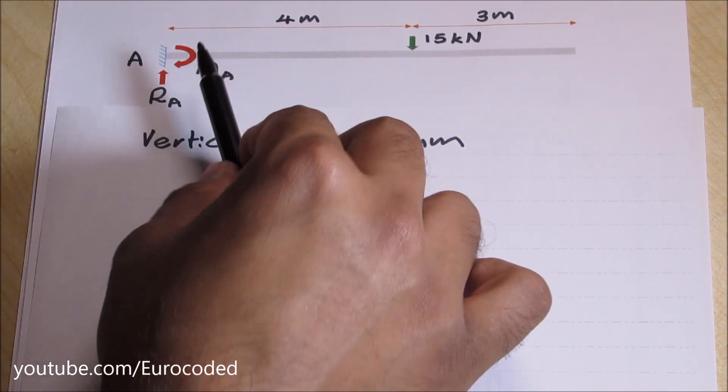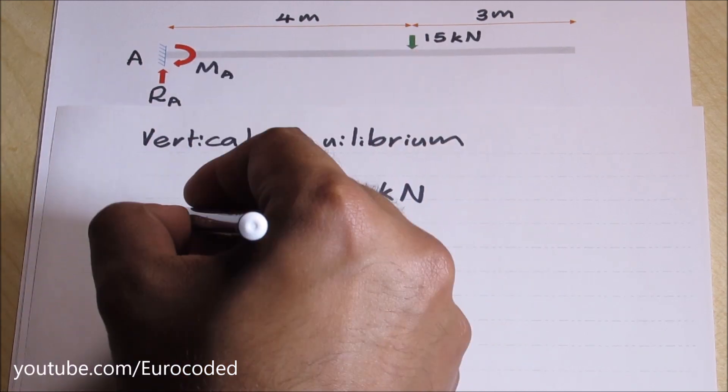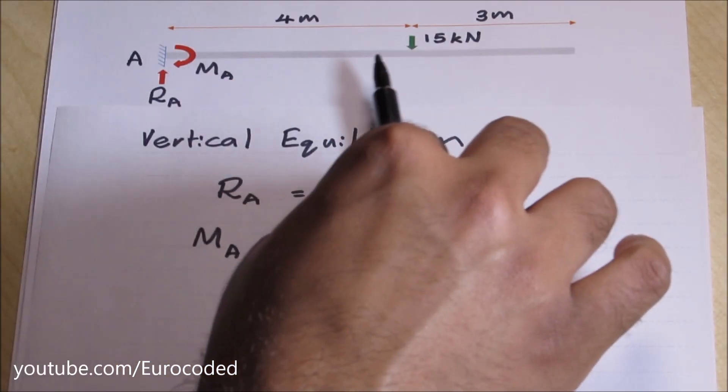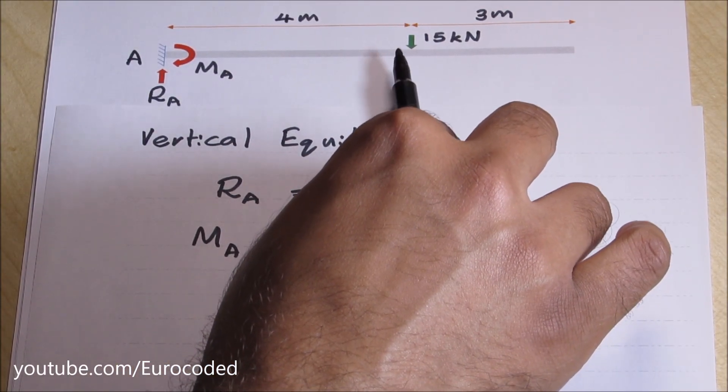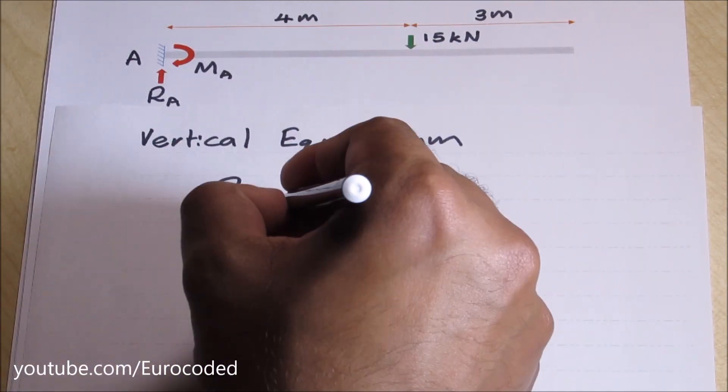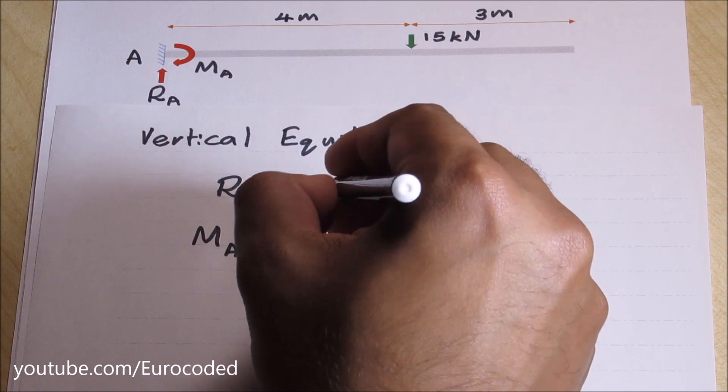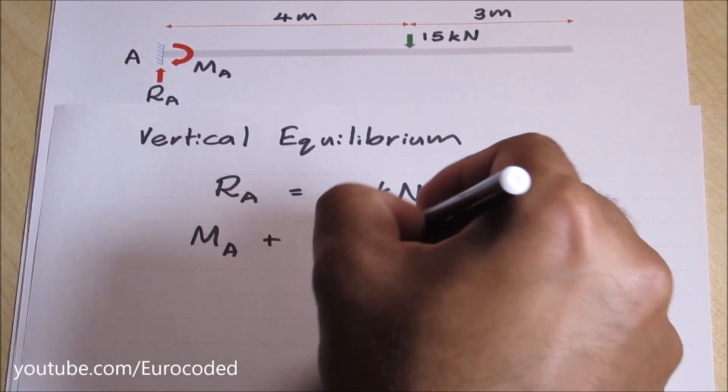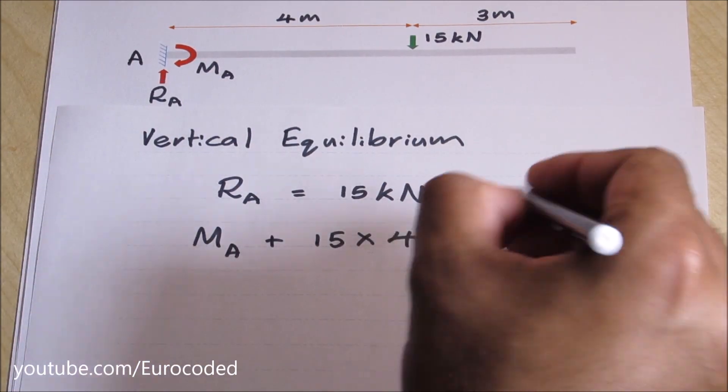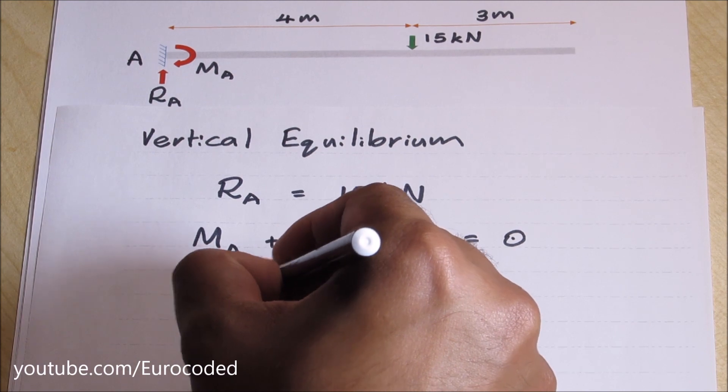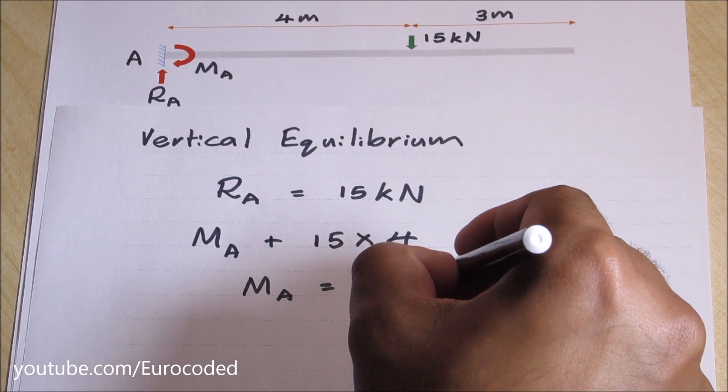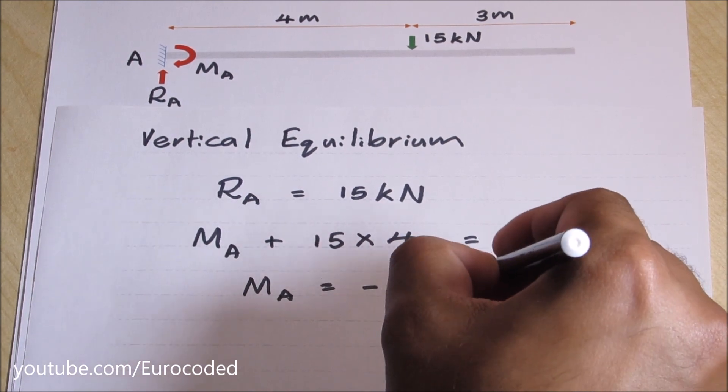We have a clockwise moment MA. Then we have another clockwise moment due to the applied force of 15 kN. The lever arm is 4 meters. So MA plus 15 times 4, and we don't have any other moment, so this is equal to 0. Hence MA is equal to minus 60 kN meter.